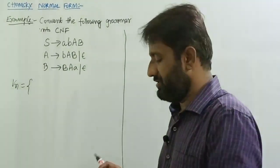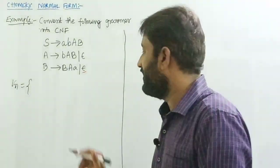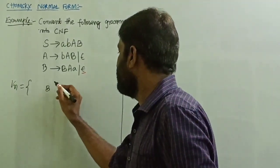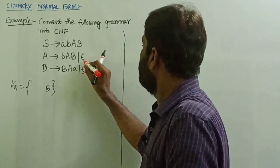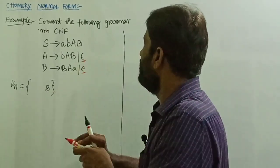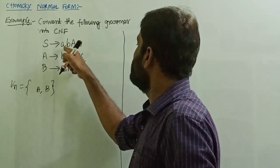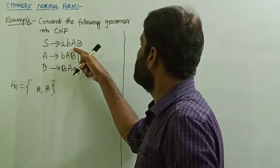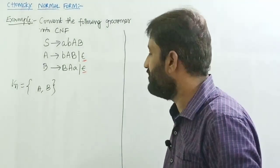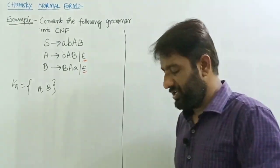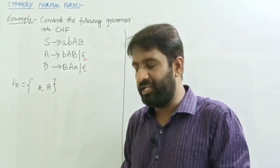First, eliminate epsilon productions. Identify if there are any nullable variables. B tends to epsilon, so B is directly a nullable variable. A tends to epsilon, so A is also a nullable variable. S tends to AB — if I replace A with epsilon and B with epsilon, it derives AB, so S is not a nullable variable. So the nullable variables are A and B.